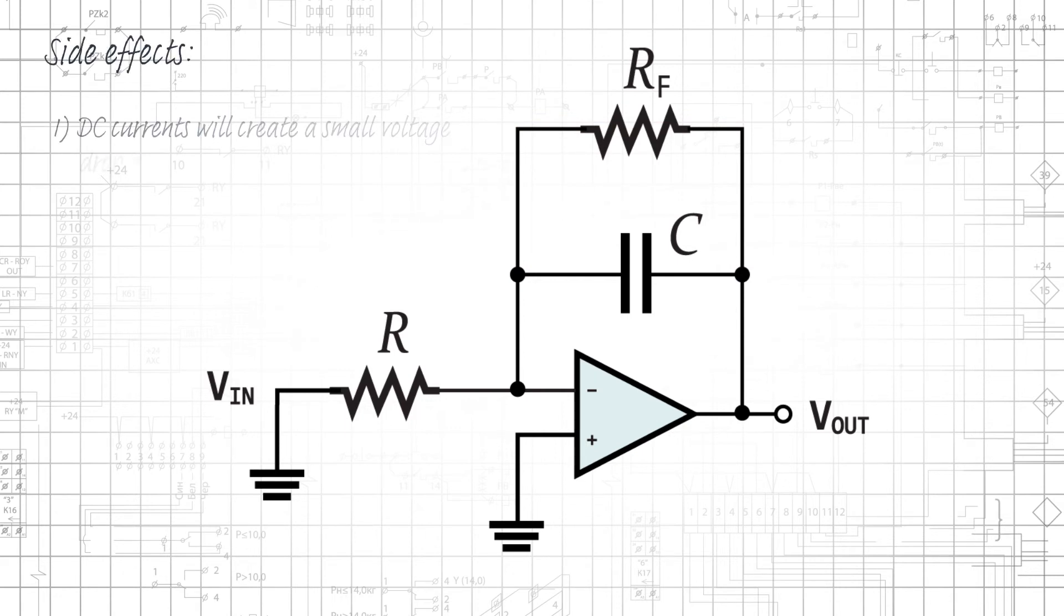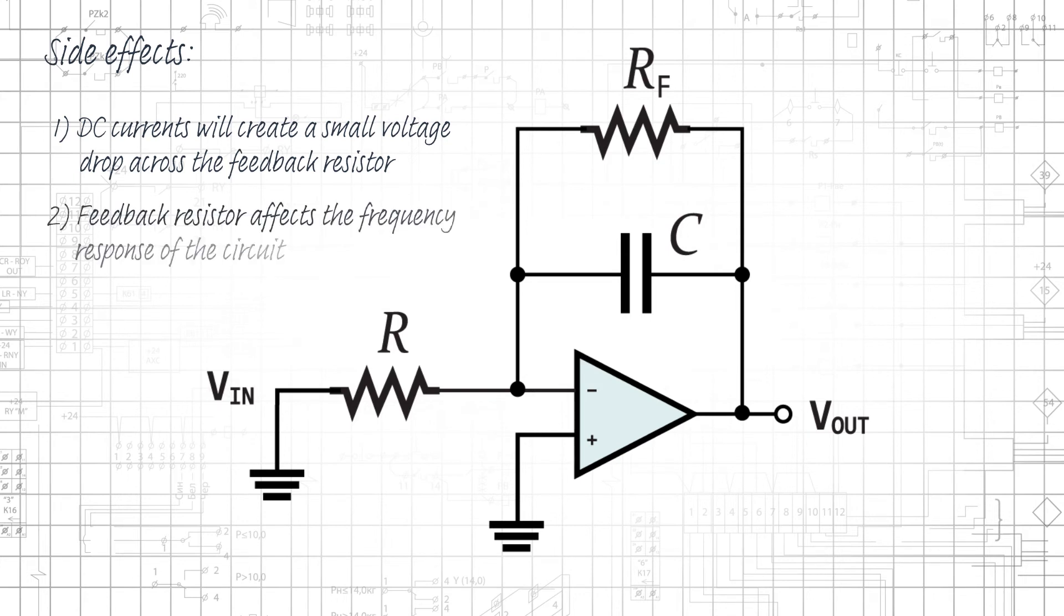First, the DC currents will create a small voltage drop across the feedback resistor, which adds an undesirable error component to the output voltage. Second, the feedback resistor affects the frequency response of the circuit in such a way that the integrator becomes less mathematically ideal.